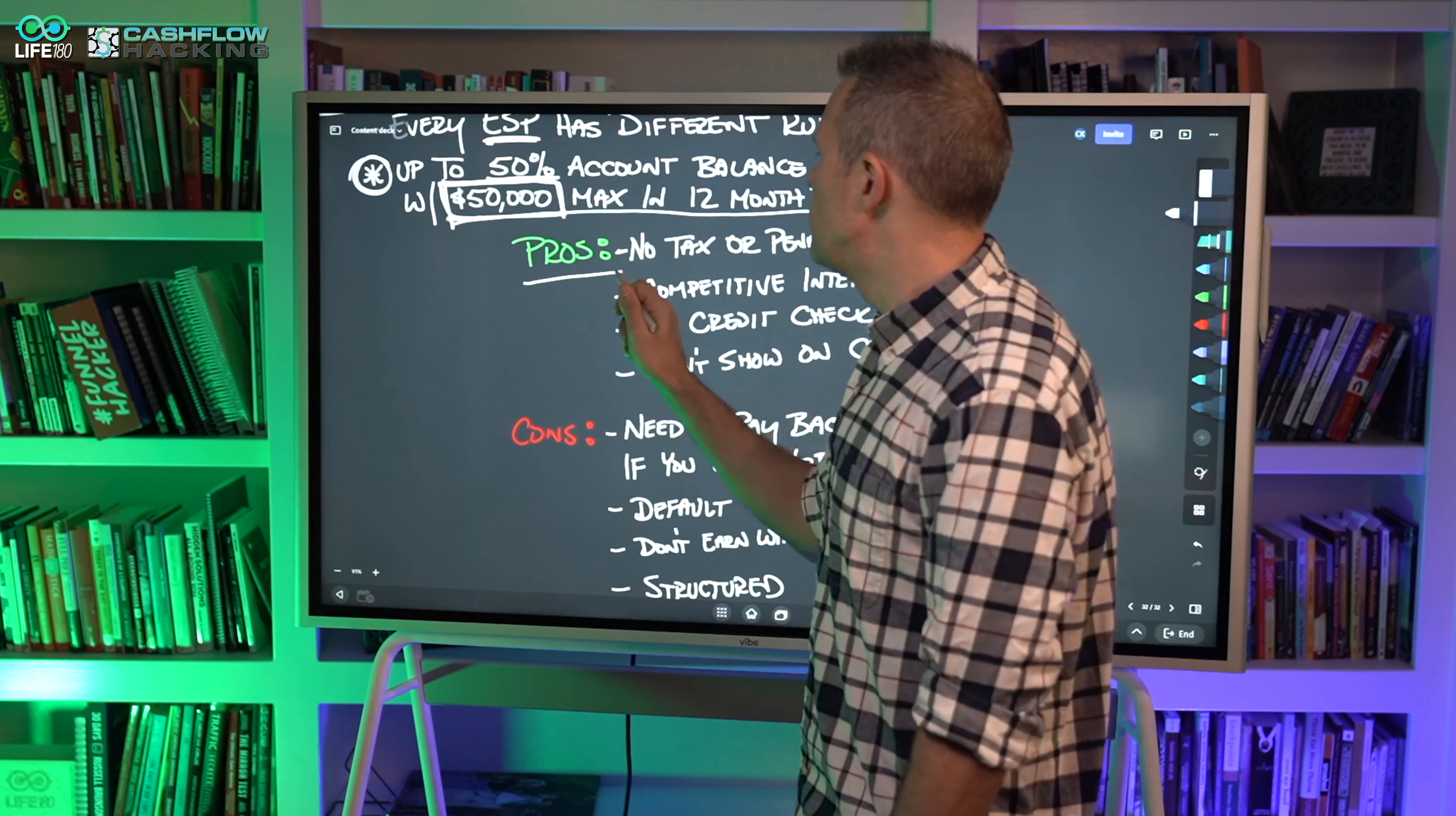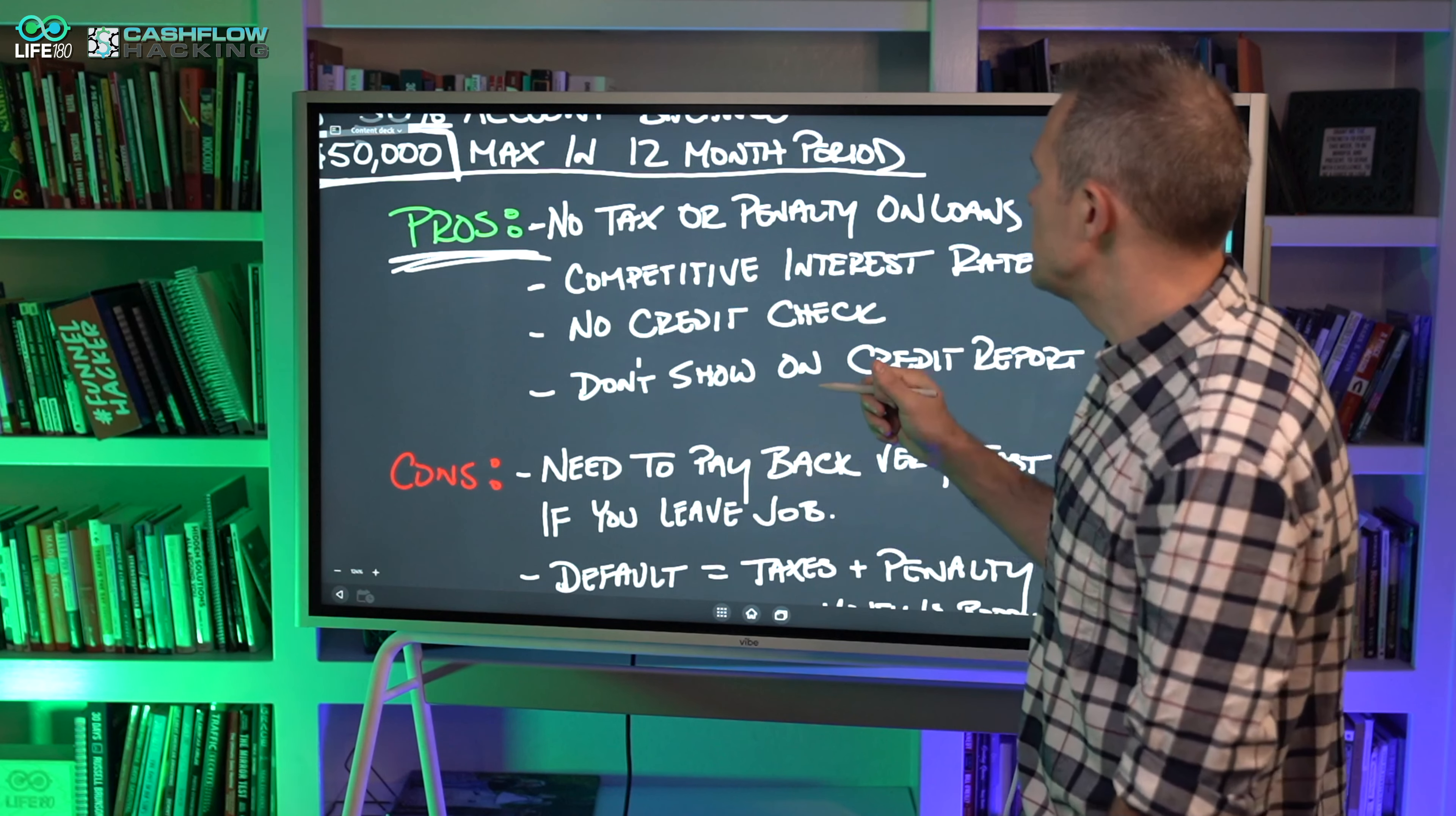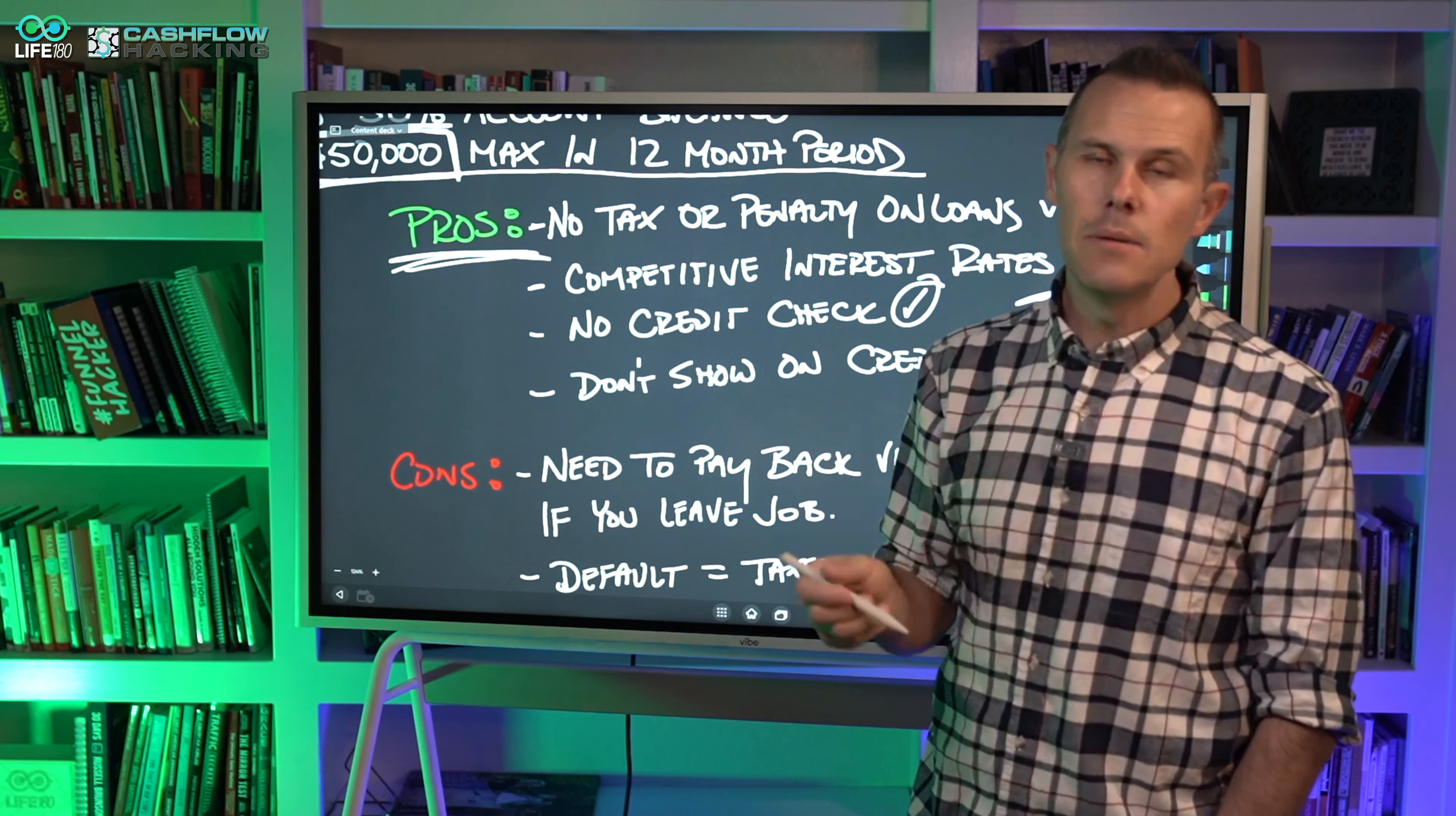Now let's go through some pros of 401k loans. There's no tax or penalty on loans. Having no taxes and no penalties on loans is a real big benefit. They have competitive interest rates when you borrow against them. There is no credit check - the money is there, it's yours. They're guaranteeing that loan and backing it up by the account value that you have in your 401k. They don't show on your credit report.